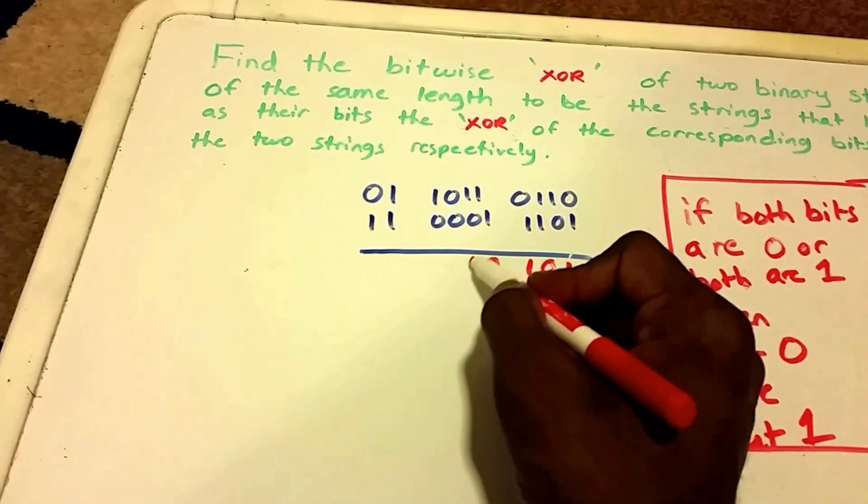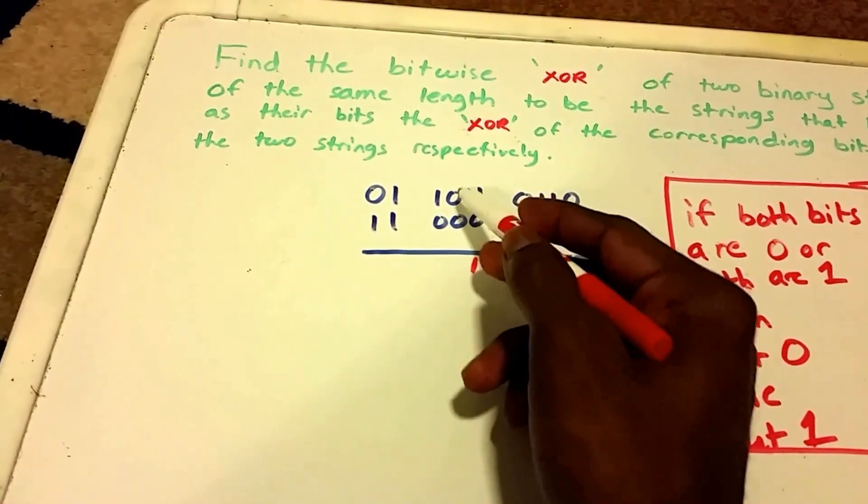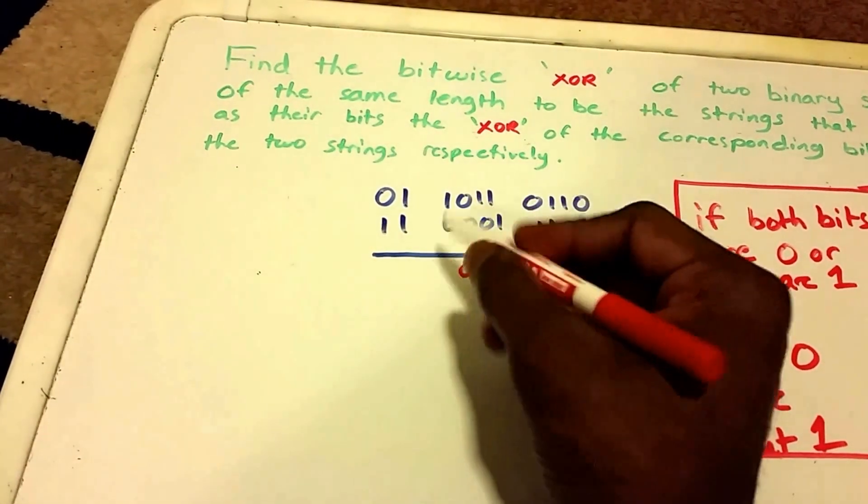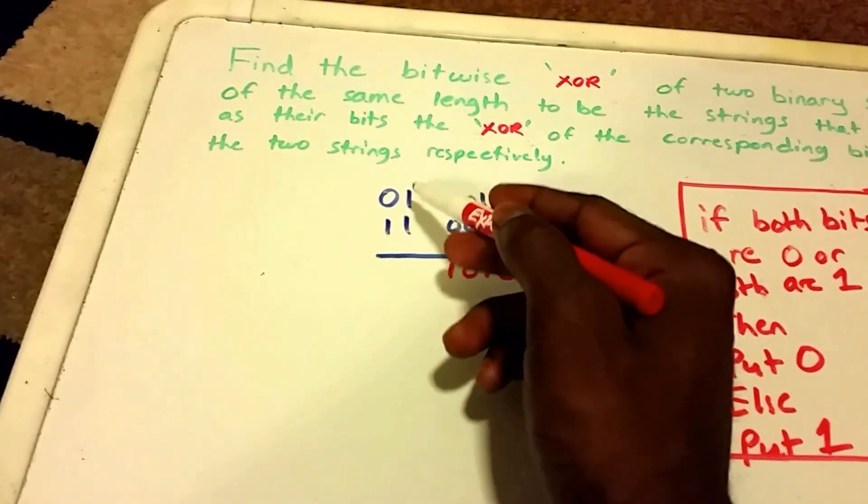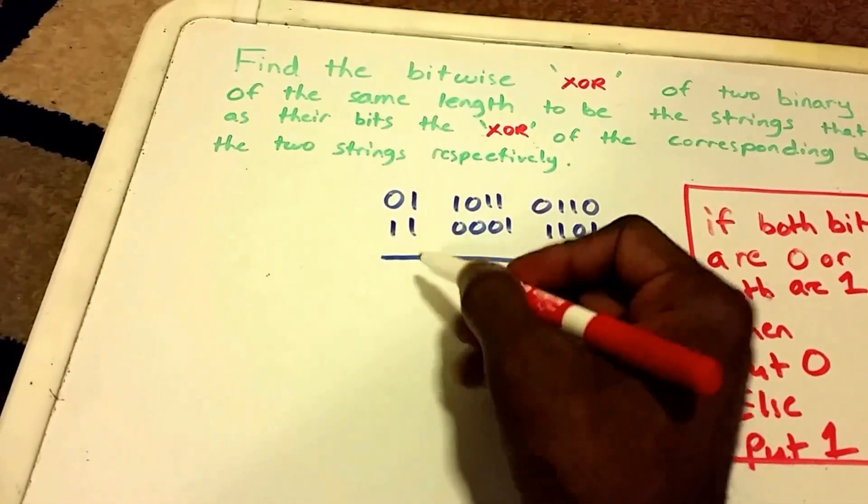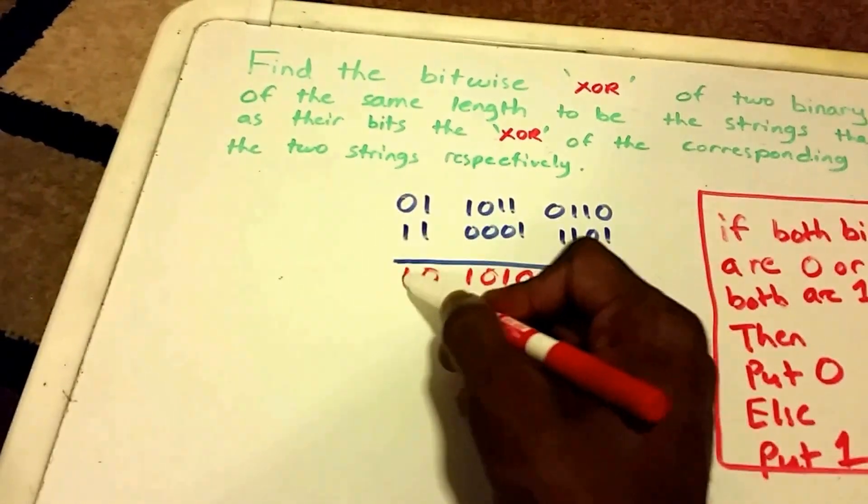We have a 1 and a 0, so you put 1. Here both bits are 0. We have a 0 and a 0, so you put 0. Then we have a 1 and a 0, so you put 1. And then both bits are a 1 and a 1, so you put 0. And then we have a 0 and 1, so you put 1.